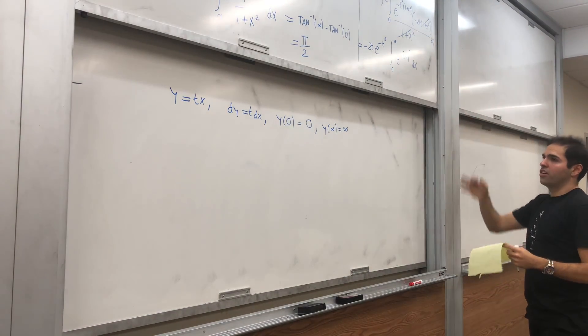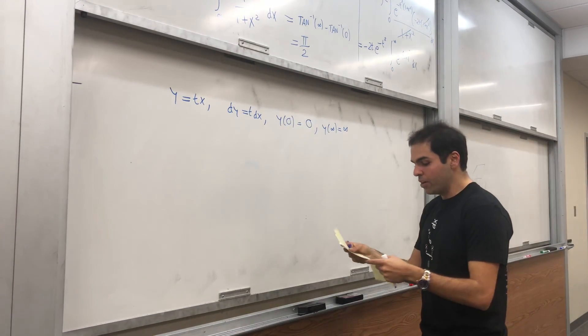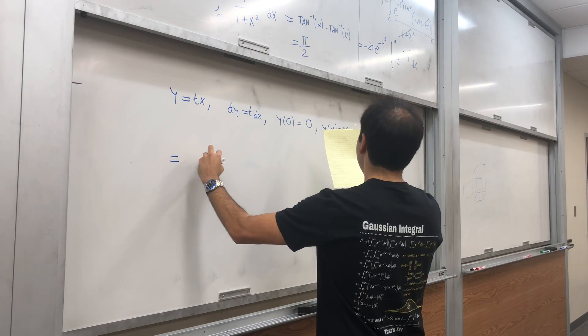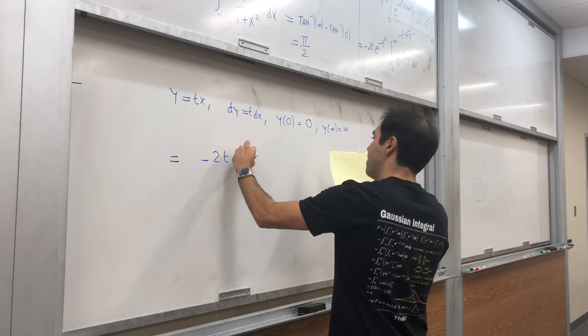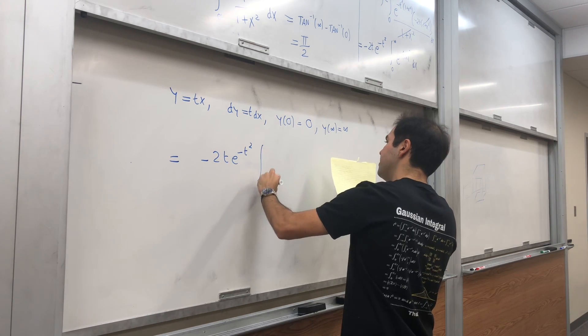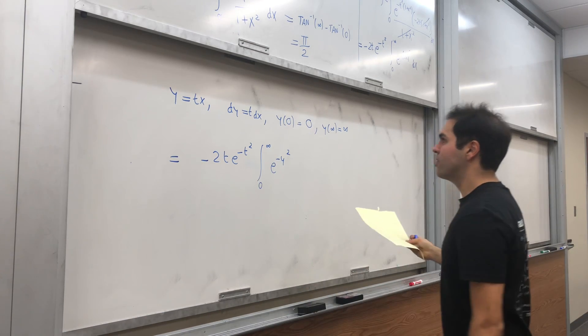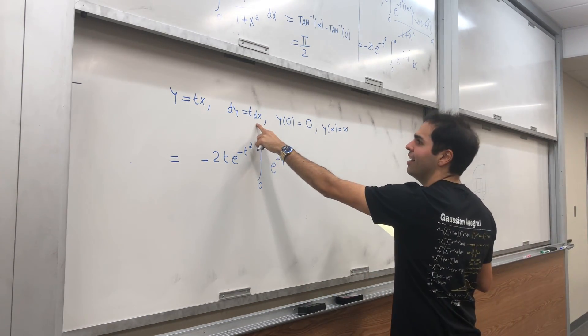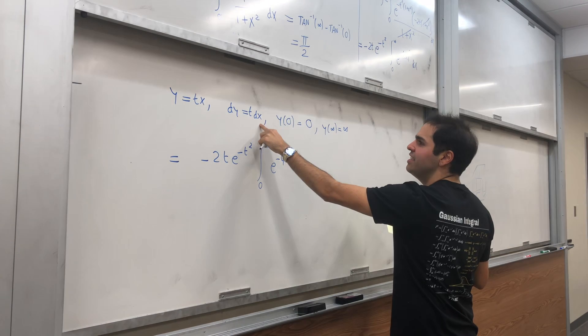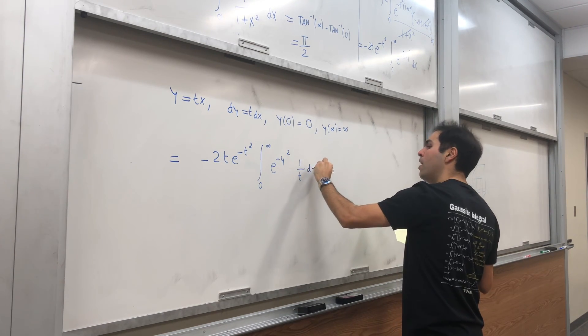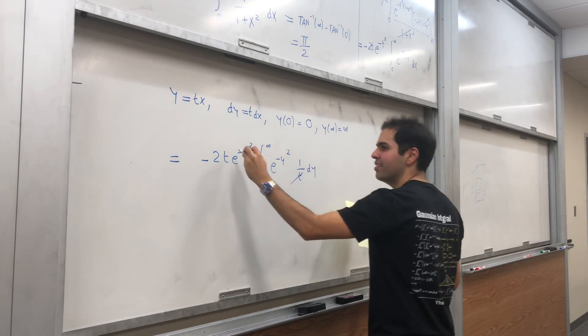And in the end, what we get is that the integral becomes, so minus two t, e of minus t squared, integral from zero to infinity, e of minus y squared, and then dy is t dx. So dx is one over t dy. And the t's cancel out.